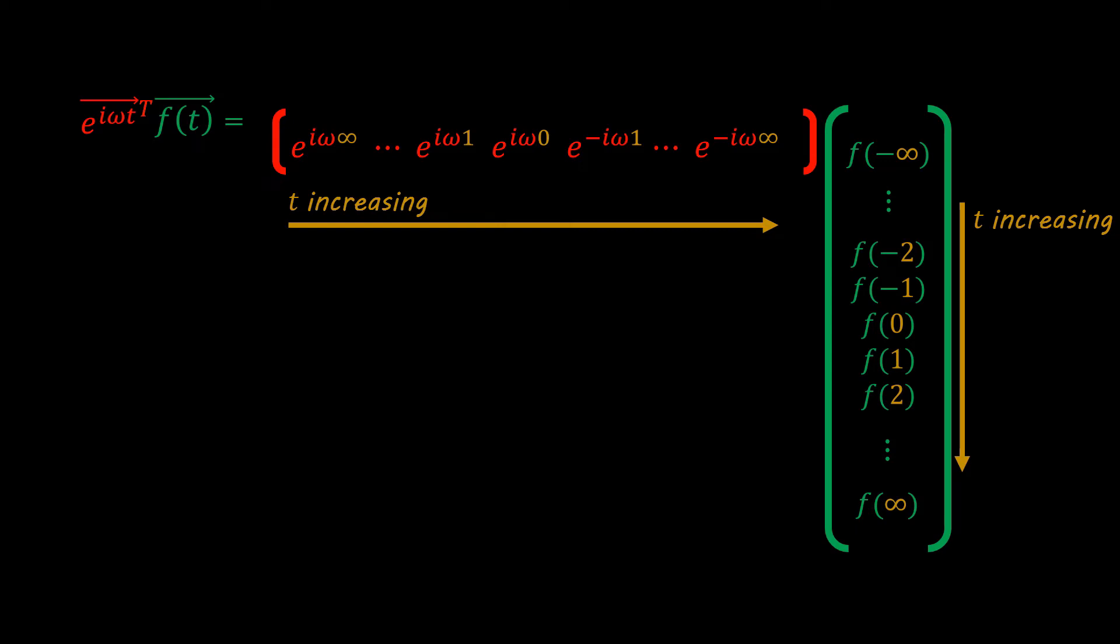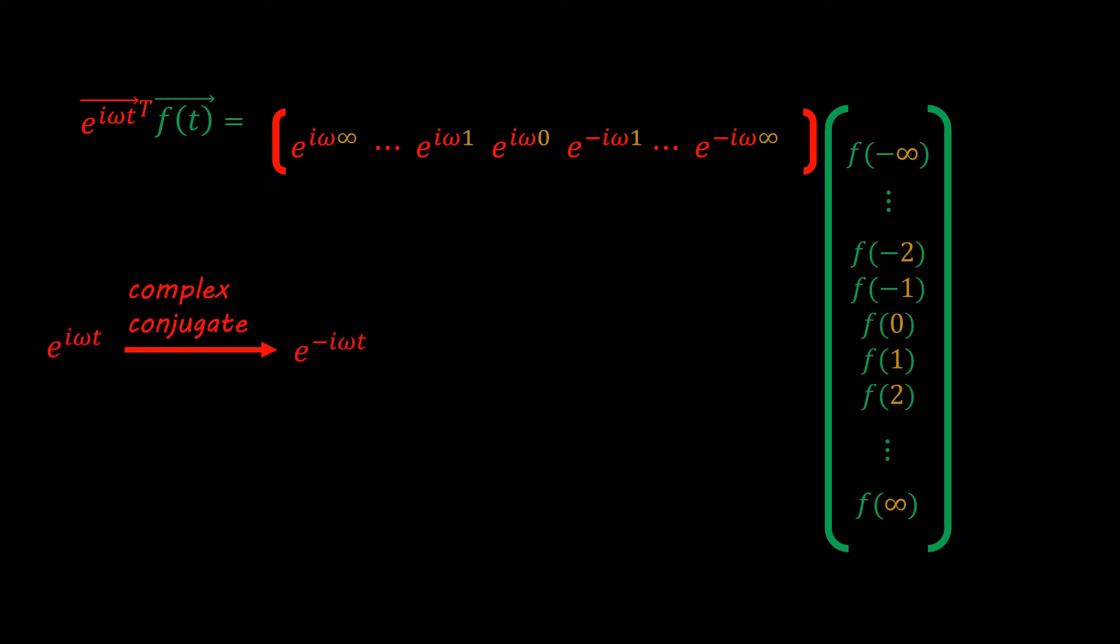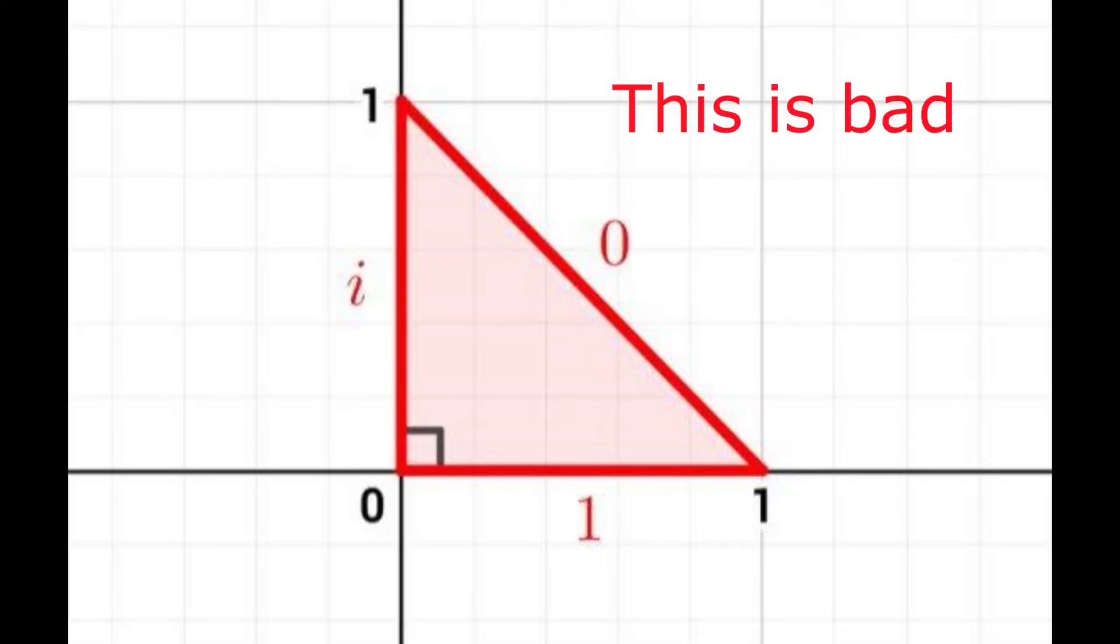And you might be wondering why the exponents in the row vector keeps getting more and more negative as we continue on to the right. Because, as I just said, time is increasing, so why is it becoming more negative? And the reason for that is because whenever we take the transpose of a complex vector, we need to take the complex conjugate. If you do not take the complex conjugate, then the whole matrix multiplication falls apart.